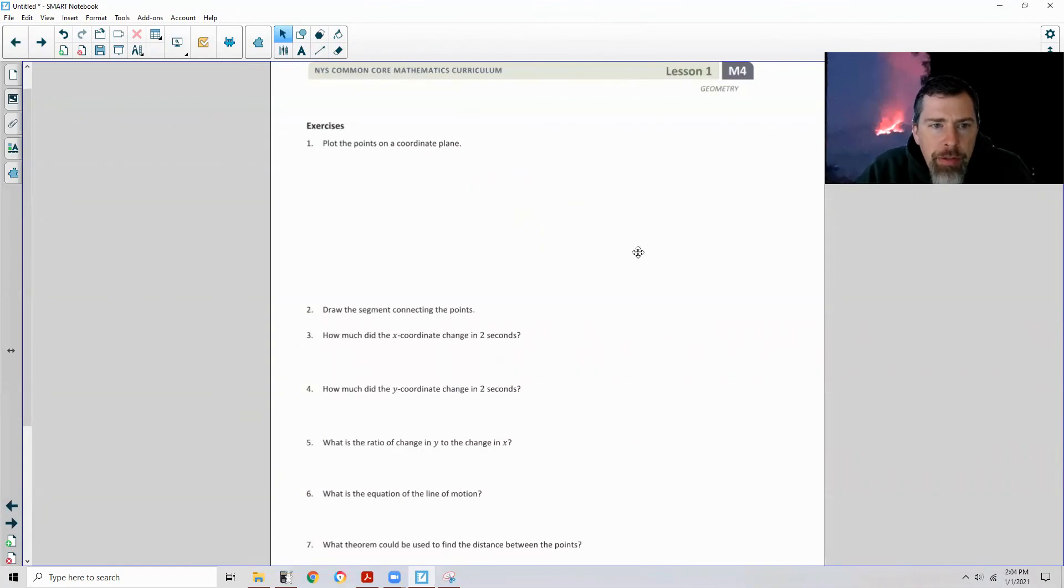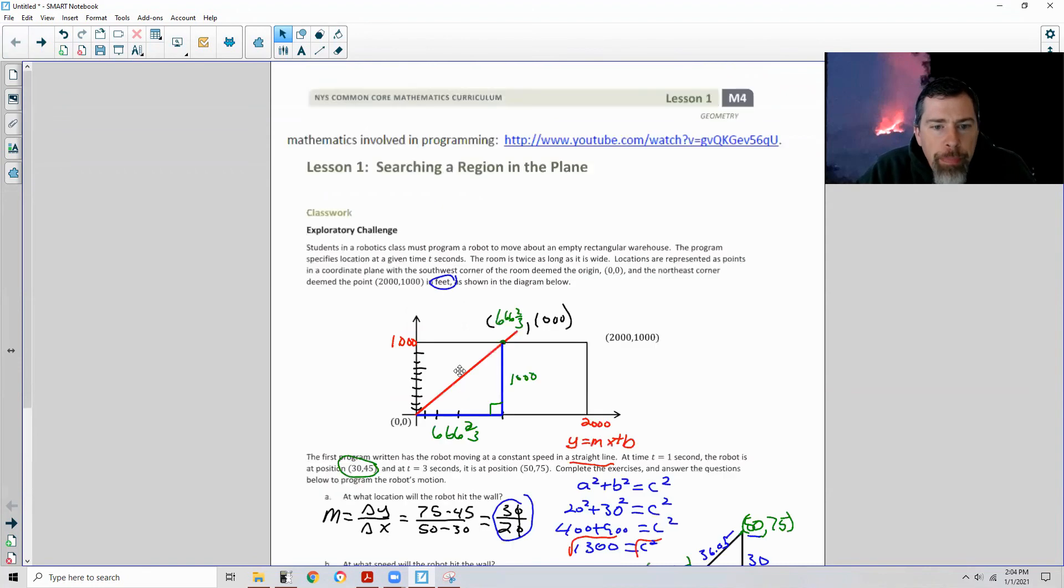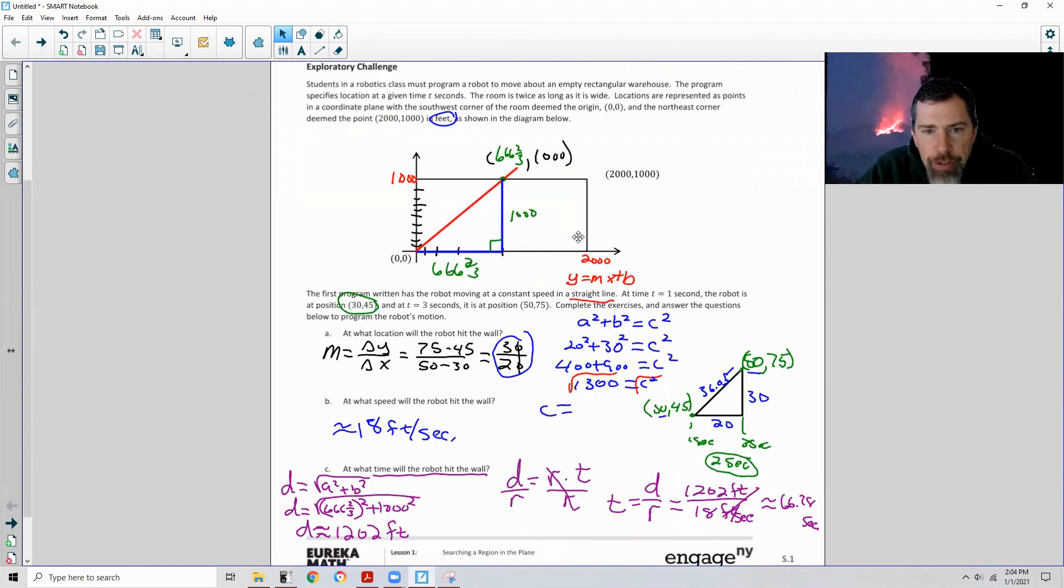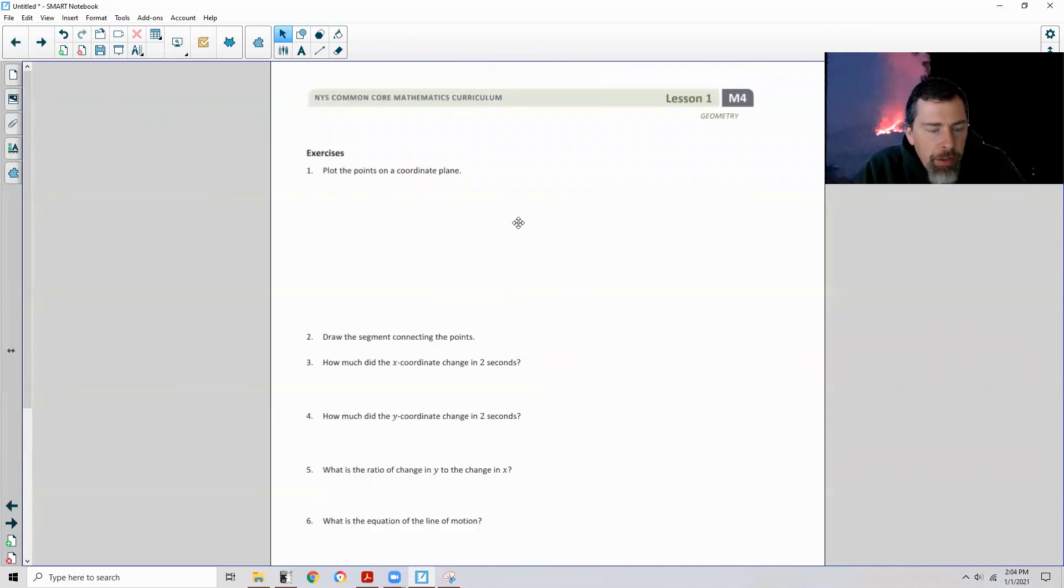Page two, exercises, number one. Now it says plot the points on a coordinate plane. So if we go back, we're really basically doing what I've already shown you. So it's asking us to plot the points on a coordinate plane and the points are (30,45) and (50,75). So if I do that, I get this. So here they are graphed on the coordinate plane, (30,45), (50,75). Note that this is probably not drawn to scale. And it says draw the segment connecting the points. So that segment's already there. So this is part one and two.